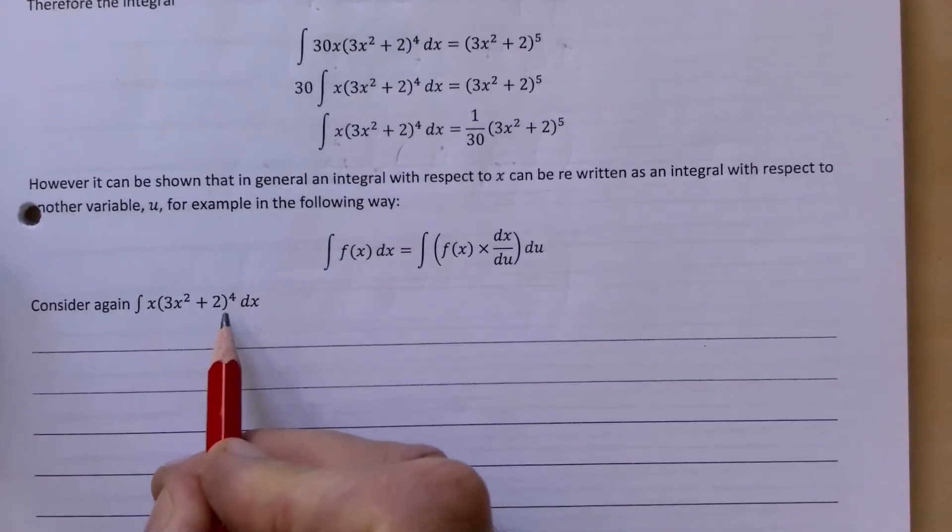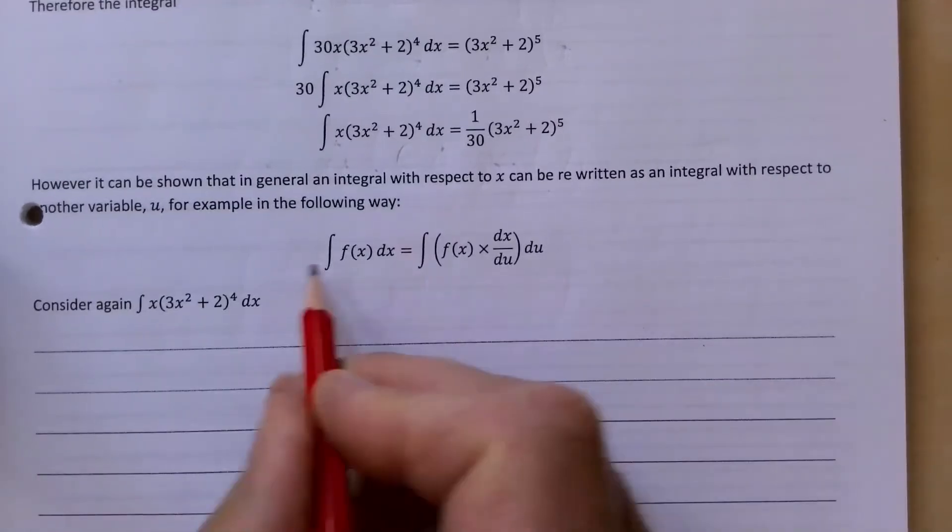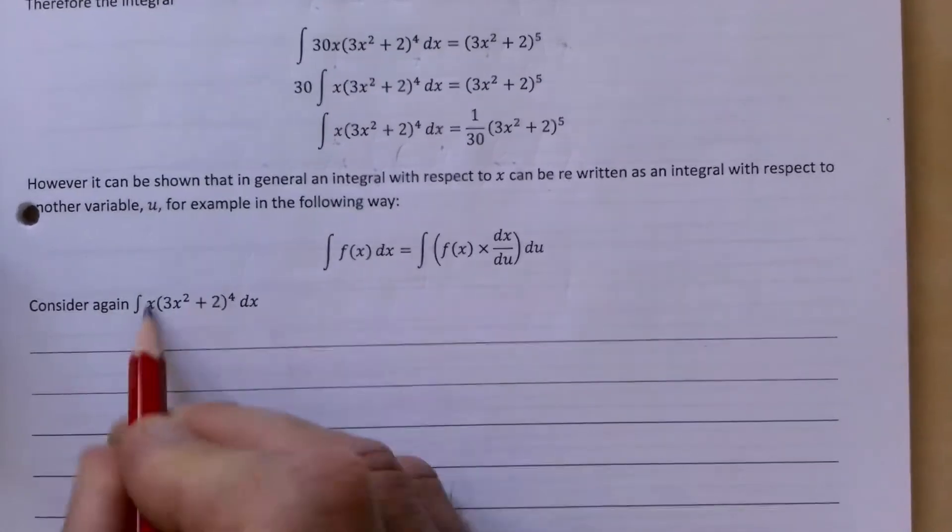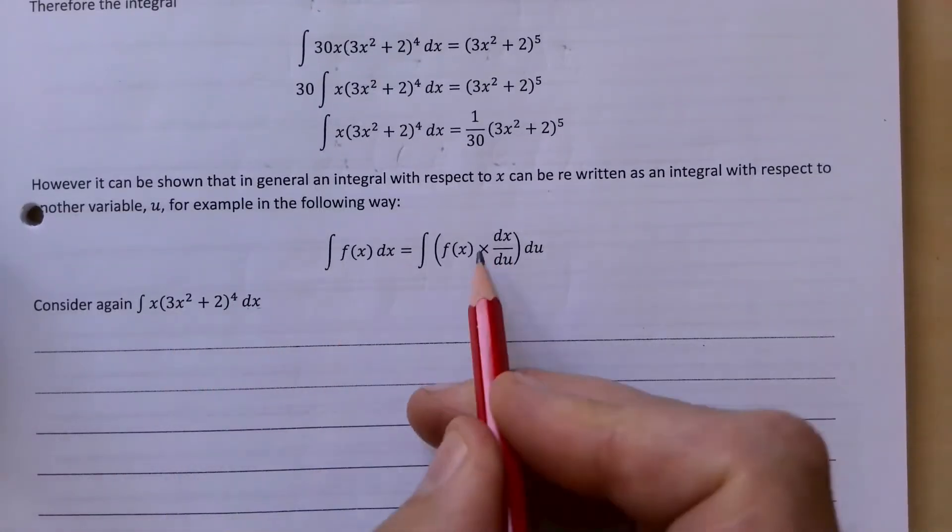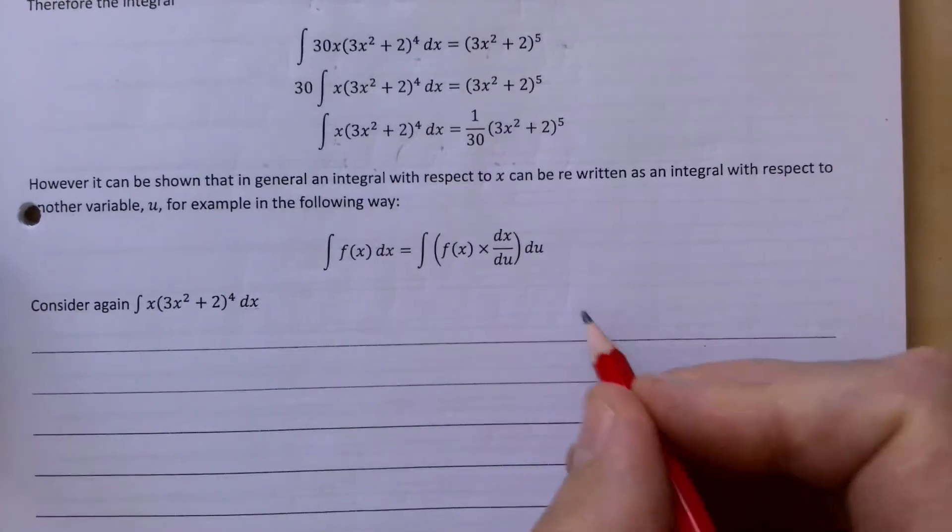It's a little bit like your chain rule where you let u equal to something and then we substitute the information into this formula here. The integral of f(x), and our f(x) is of course this bit here with respect to x, and we need to find our dx/du and change everything in terms of u. So the first example looks like this.